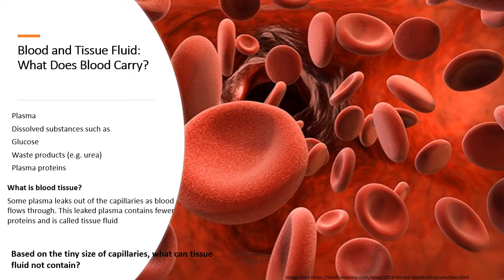The big question students usually ask is: what is tissue fluid exactly? If blood carries all of these dissolved components, then what is tissue fluid? Tissue fluid is simply when some of the plasma leaks out of the capillaries as blood flows through them. In the previous video, we said arteries transport blood at very high pressure away from the heart. The capillaries are a very thin network of blood vessels that allow blood to flow very close to our extremities.